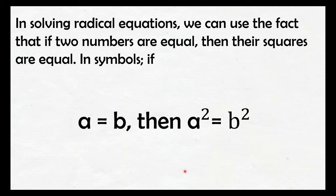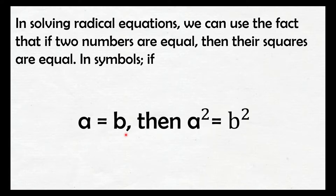In solving radical equations, we can use the fact that if two numbers are equal, then their squares are equal. In symbols, if a equals b, then a squared is equal to b squared. Kagaya lang ito ng binabanggit ko lagi — kung nag-square ka sa left side, kailangan mag-square ka rin sa right side para palagi siyang balance. Gagamitin natin itong concept na pag-square both sides mamaya sa pag-solve ng radical equation.